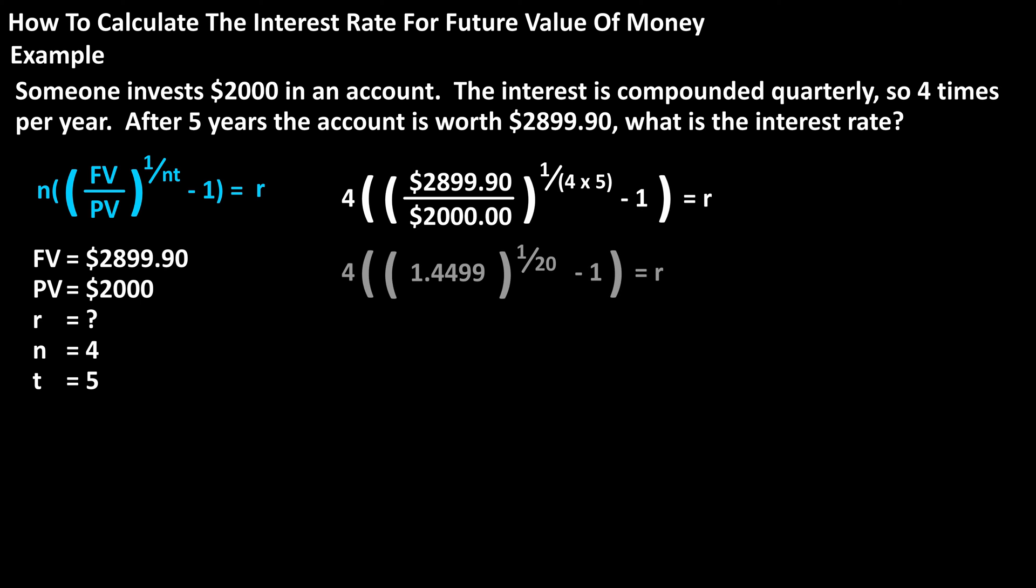From this, we have 4 times the quantity 1.4499 rounded off raised to 1 over 20 minus 1. Here are the calculations written out on the screen, and this calculates to 0.075, or 7.5% as the interest rate earned on the investment.